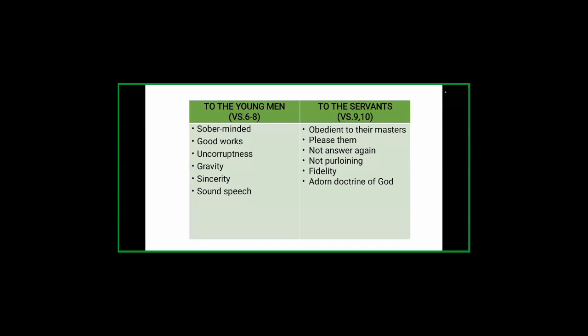Summing up the qualities young women are to have, one word captures them all: love — love brings everything. That is what the aged women are instructed by Titus to pass on to the young women. Verses six to eight cover instructions for young men: they are to be sober-minded, do good works, have sound doctrine with no corruption, gravity, sincerity, and sound speech. The aged women and aged men must first follow these qualities themselves so the younger ones will follow them.